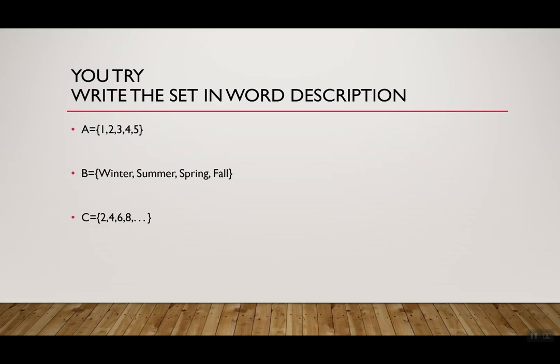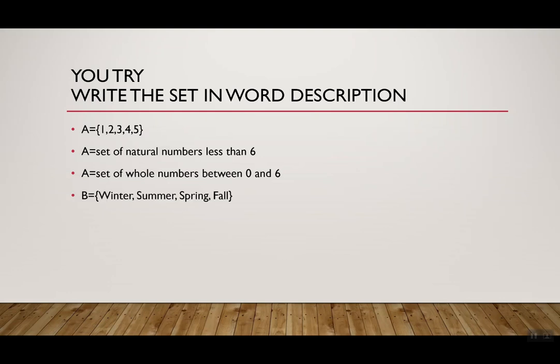Alright, so hopefully you paused me, you wrote down your answers, and now we're looking together. So the first one, A = {1, 2, 3, 4, 5}. If I wanted to describe that in words, I could say this is a set of natural numbers less than 6. You could have also said a is a set of whole numbers between 0 and 6. You could have said it's the set of natural numbers less than or equal to 5. You could have said the set of whole numbers greater than or equal to 1, less than or equal to 5. There are choices. I like that about math. It doesn't have to be exactly just one way. So as long as you somehow gave me a word like natural, whole, integer, you're in good shape.